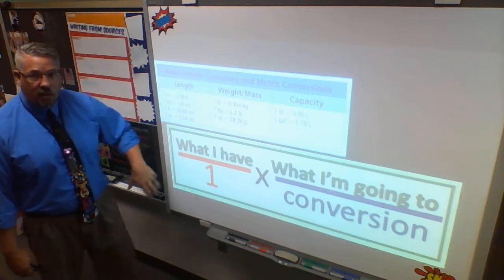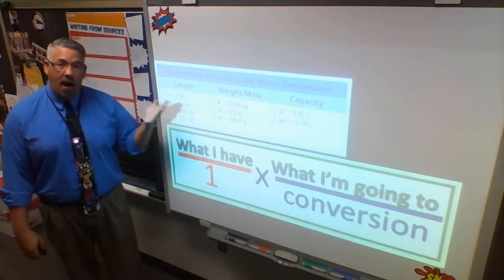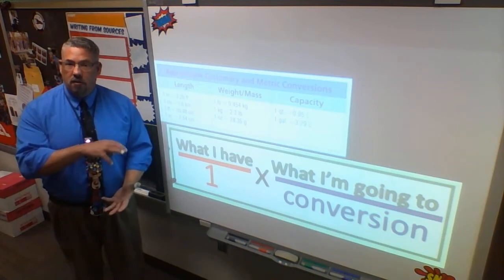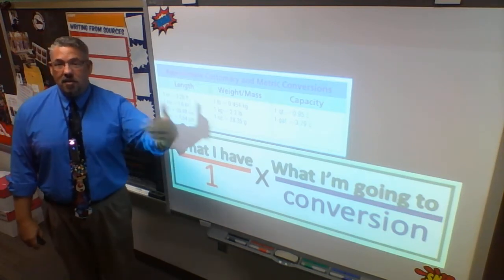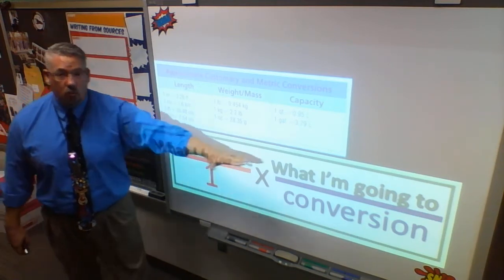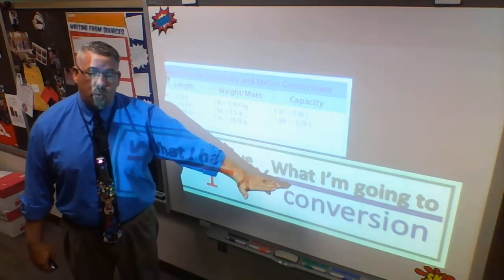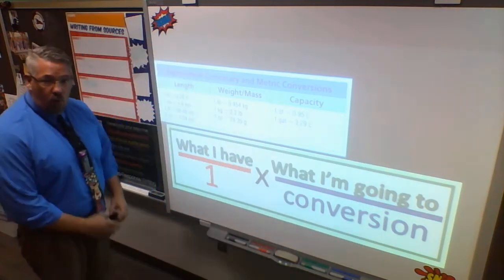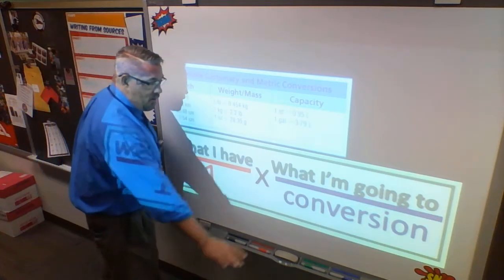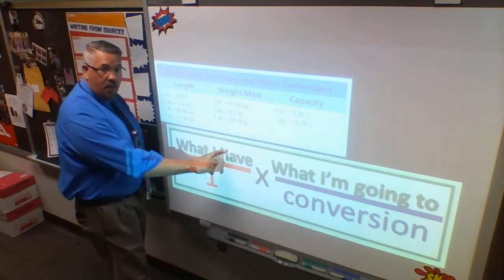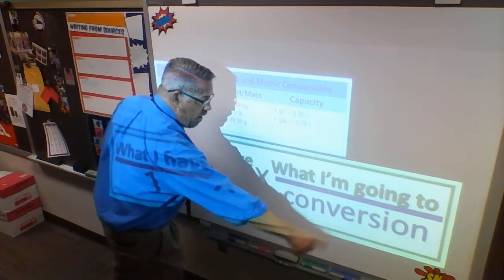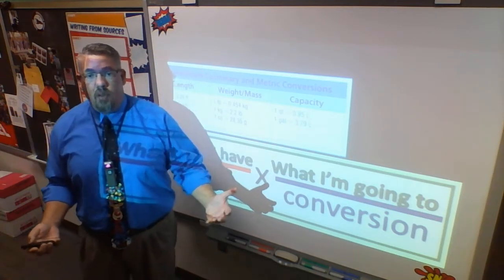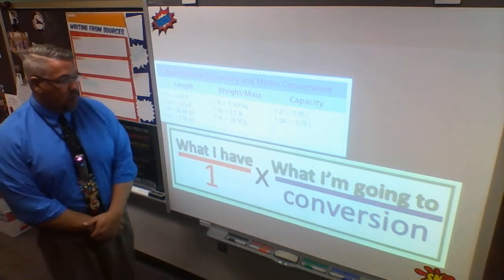As long as I can go through these things and know what I have, I put it over one — that gives me my first rate. I'm going to multiply it by a second rate. That second rate's numerator is what I'm going to, and I'm always going to put it over the conversion. That puts the same label I have up here down here so I can cross it out. Then I'm either going to multiply or divide depending on what my setup is.